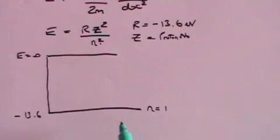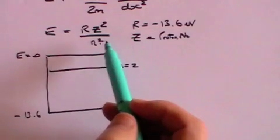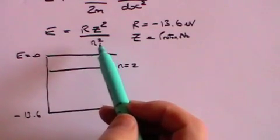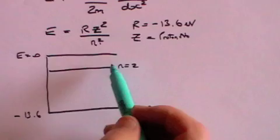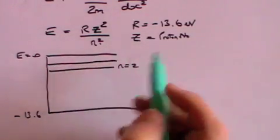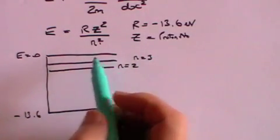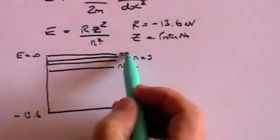But if n is 2, then n squared will be 4 and therefore you only get a quarter of the energy. If n is 3 then you will only get a ninth of the energy.